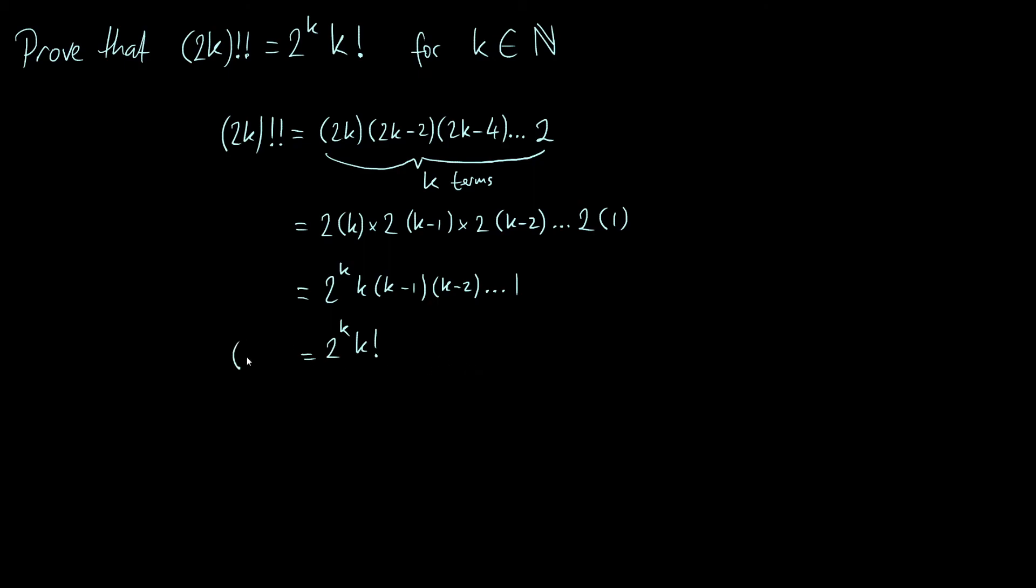So there we go. We've derived our result: (2k)!! = 2^k times k!.